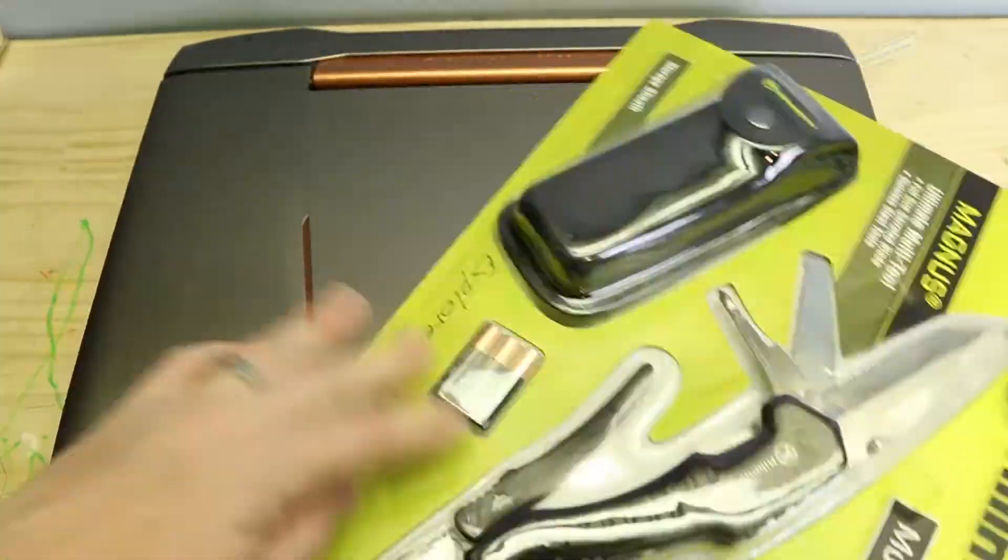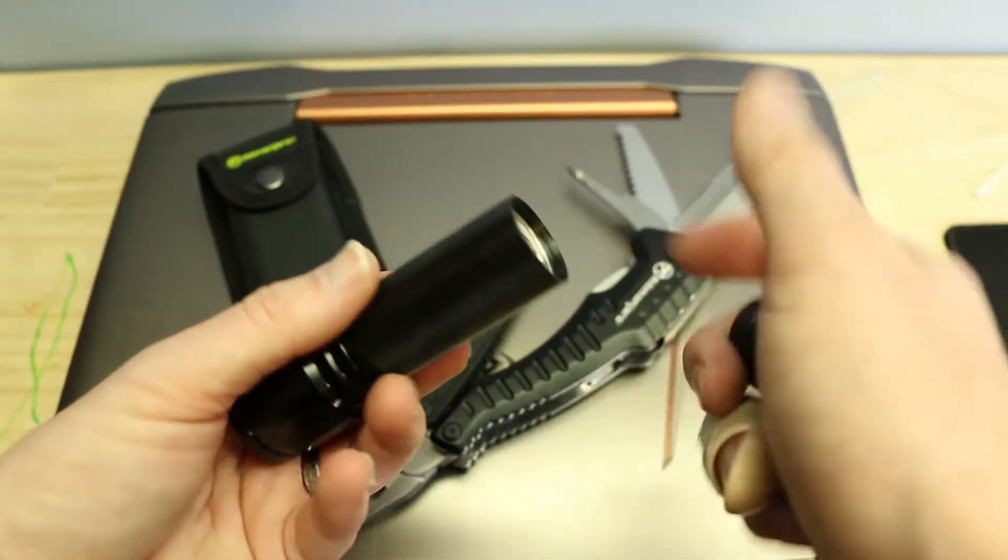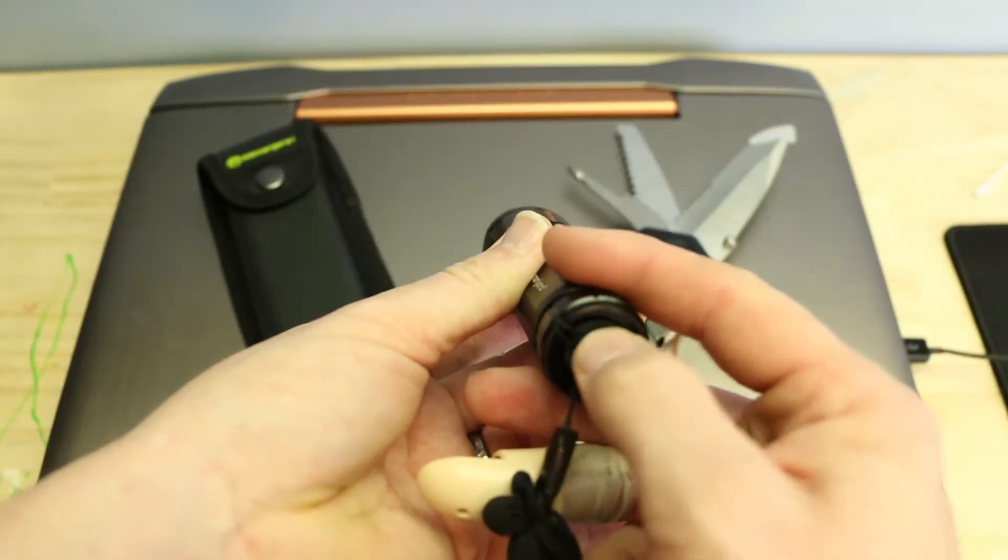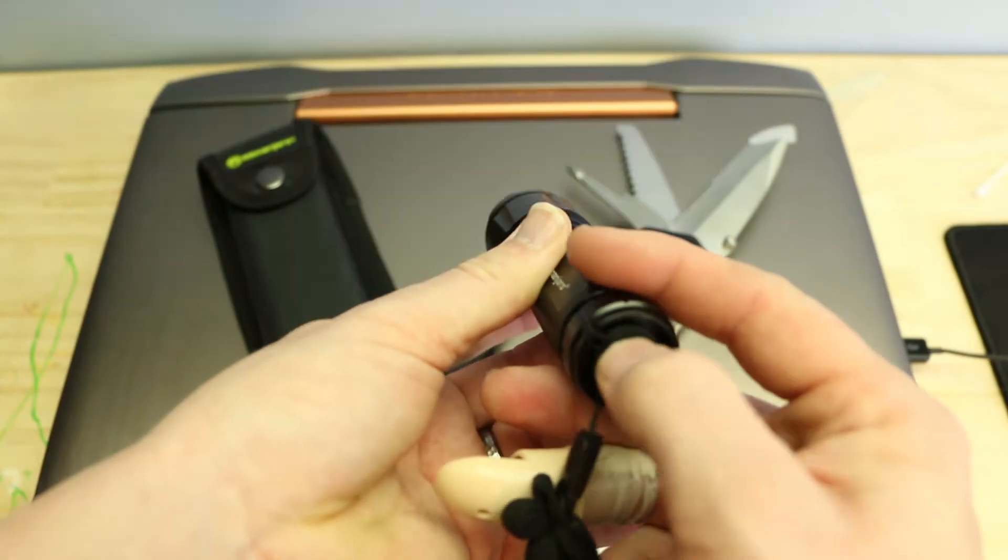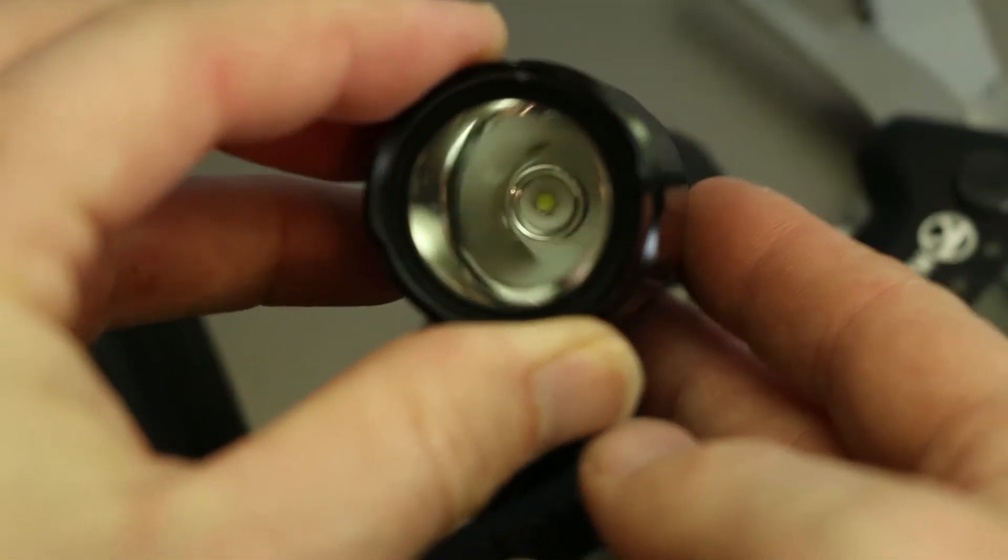I'm gonna do more of an in-depth on this flashlight for Flashlight Friday, but I loaded the batteries and it's got three settings. You got high, low, and then strobe. That's not bad for one of these flashlights. It usually just runs off the AAAs. Not bad.